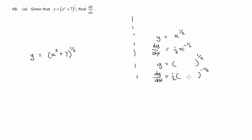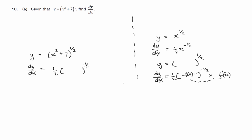We have to bring in the chain rule and look closely at this expression — whatever it is, let's call it f of x — that we're raising to the power of half, and we differentiate it and multiply by the result. That's the chain rule. So dy by dx would be a half of this to the negative a half, times whatever we get when we differentiate x squared plus 7, and that's 2x. So 2x is the adjustment we need there — that's the chain rule in action.